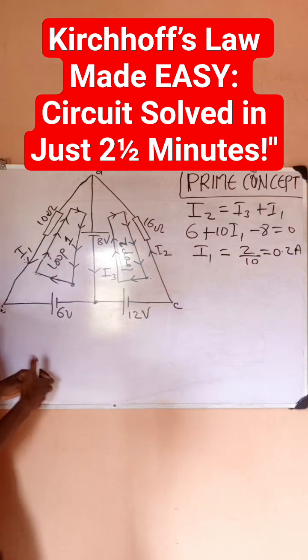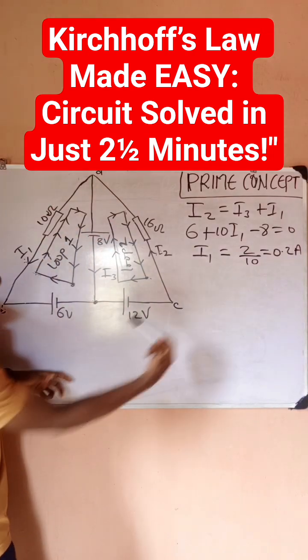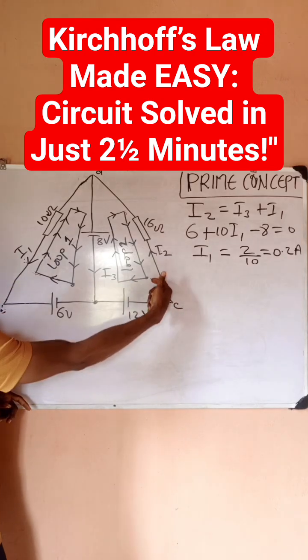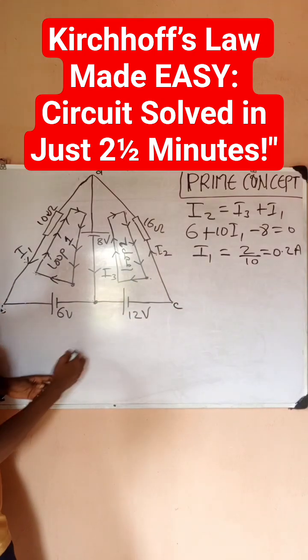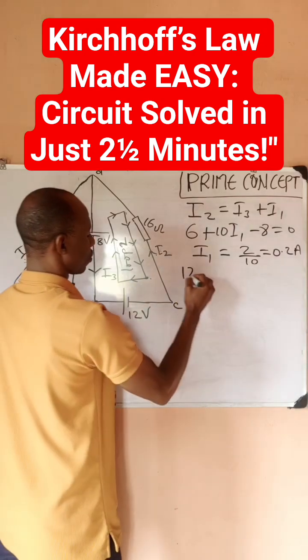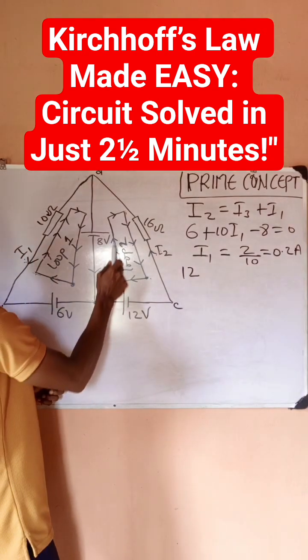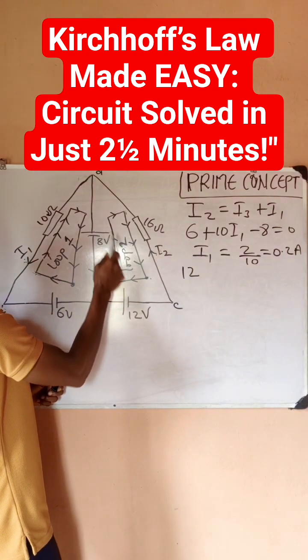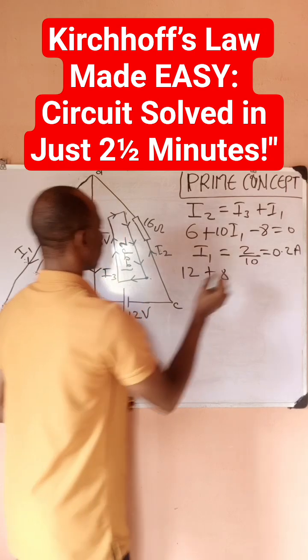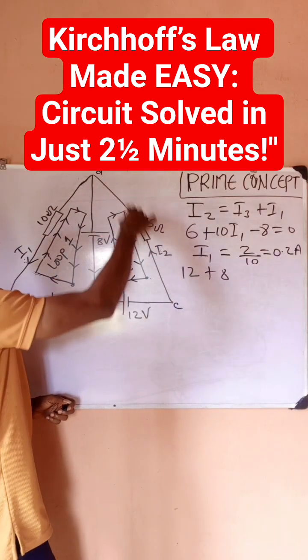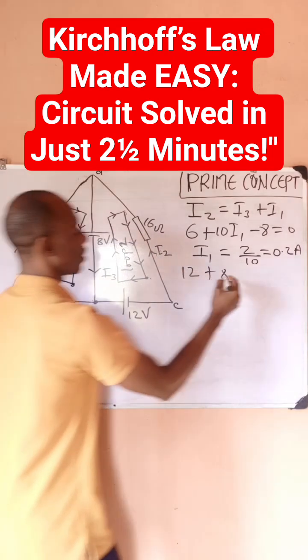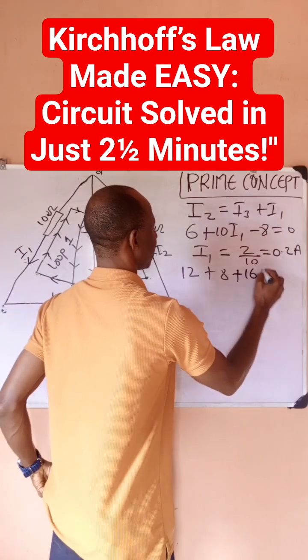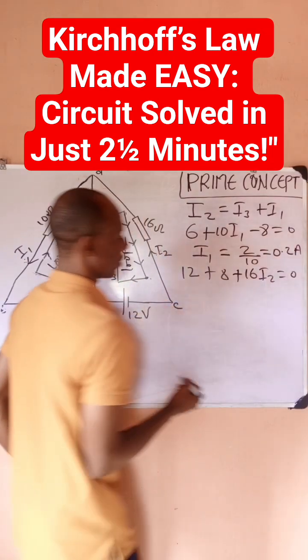Next thing, I want to analyze this loop. If I start from this point, my loop would come out from my positive terminal here, which is going to be plus 12. When I go up, my loop is going to come out from positive again, which is plus 8. Then when I'm coming down, my loop is coming down while my current is going up, which is still positive. So plus 16 I2 equals 0.